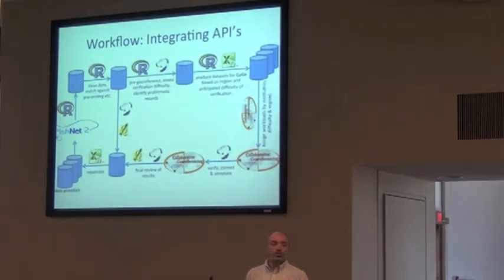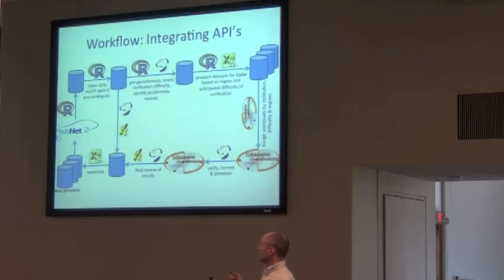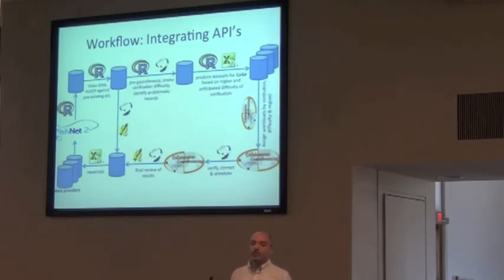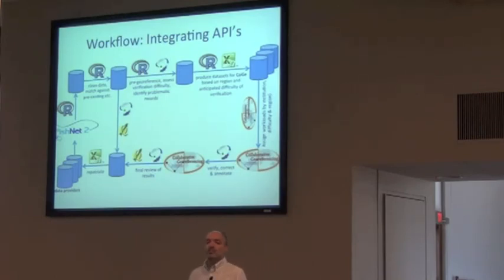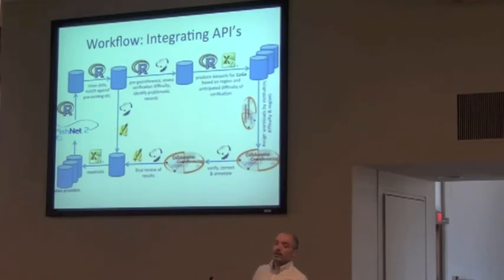We wanted to create a workflow that was very reproducible so that as we get new data in, we can send it through an automated pipeline with minimal effort. We standardize on using R as the primary means for getting data, manipulating data, doing the first batch of cleanup, and getting things into an internal database. Once in the internal database, the project manager does final data cleaning and exports datasets that get uploaded into the collaborative georeferencing portal, where they get processed, georeferenced, corrected, and reviewed using Geolocate as well as some GIS software. Near the end of the project, we start repatriating data back to providers.